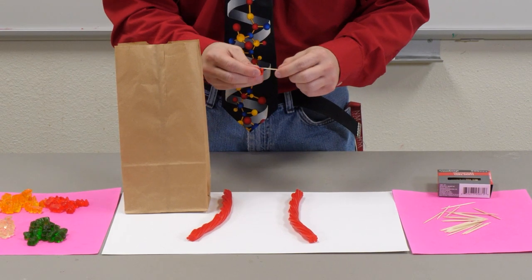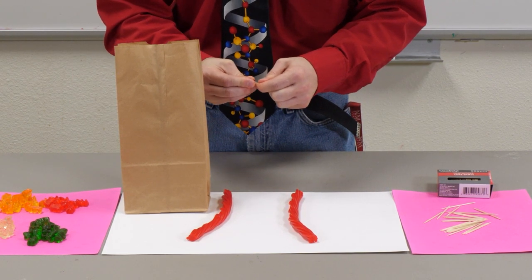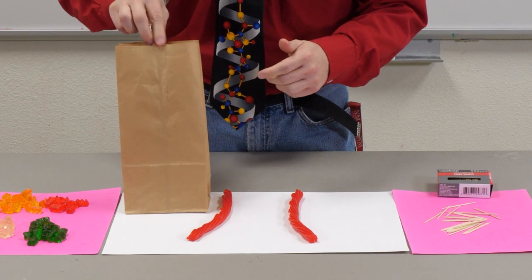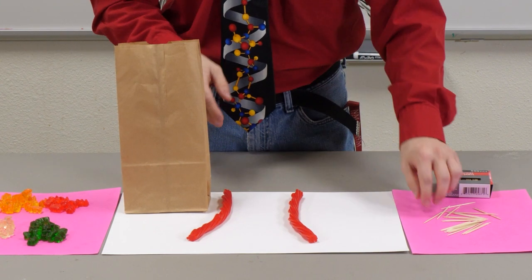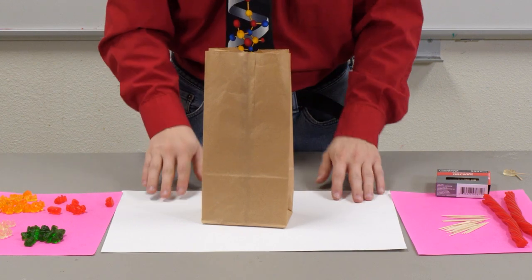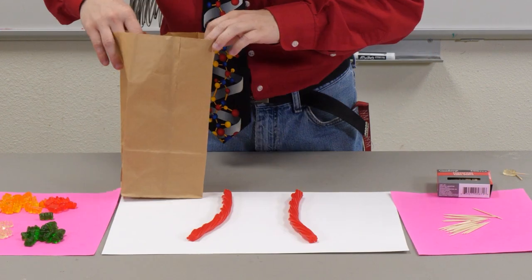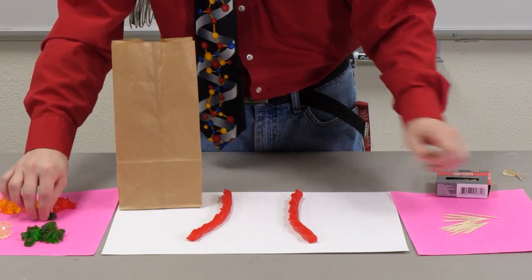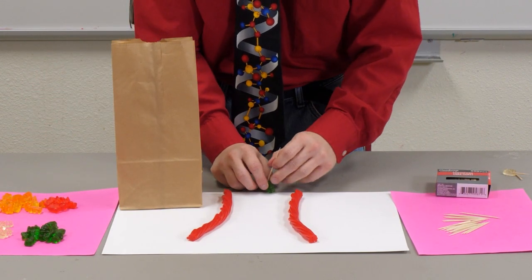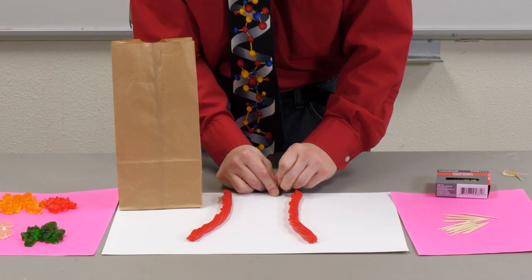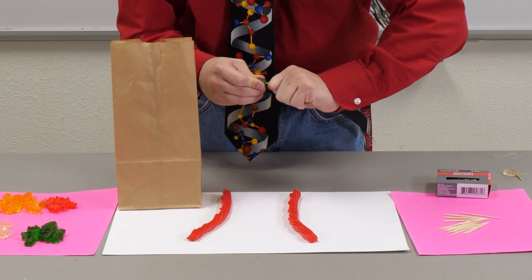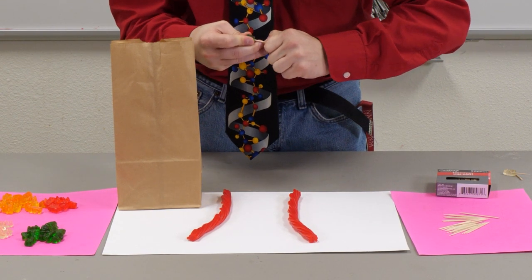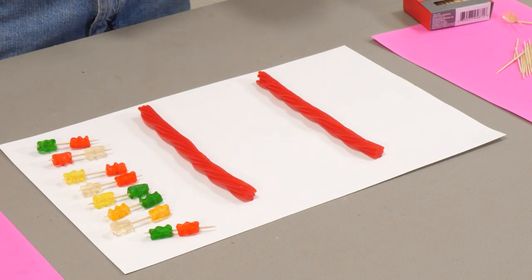Start by making your base pairs. To do this, skewer your candy onto the toothpick. You can assign each color to be one of your four base pairs. To make this activity more scientific, what you want to do is make the base pairs at random, either by drawing them out of your bag with written notes or like I did, make a bunch of random base pairs then draw eight at random from your bag.